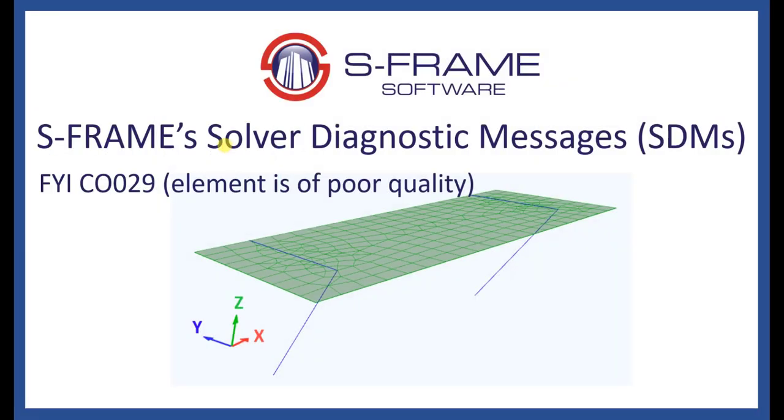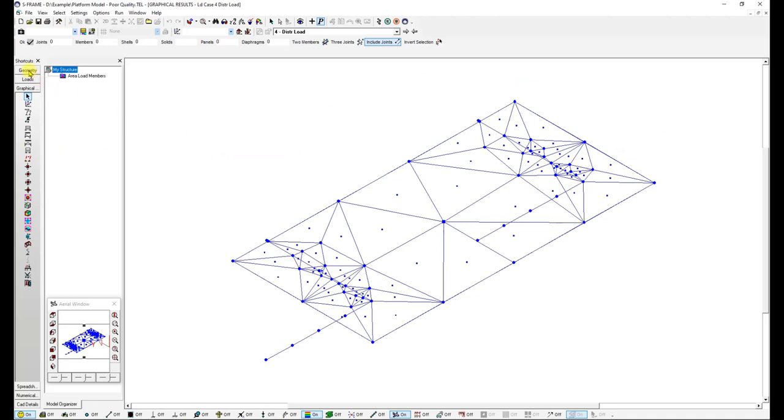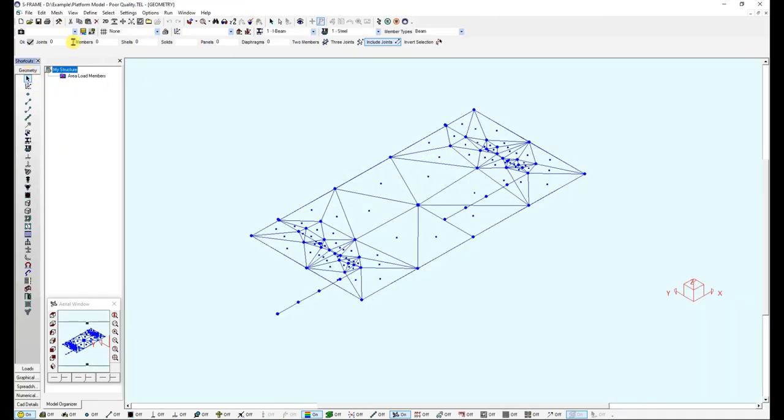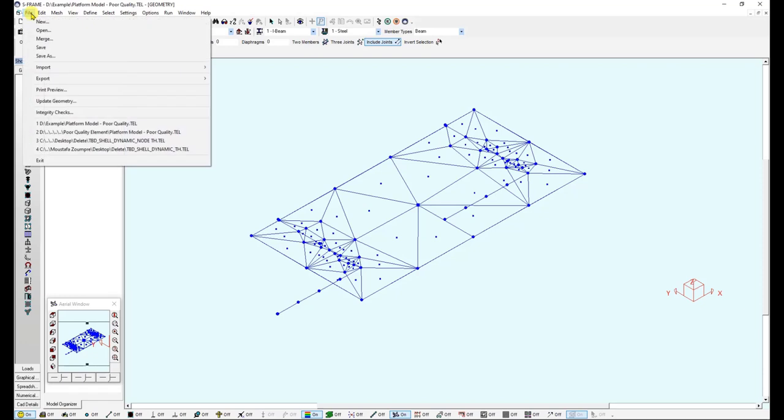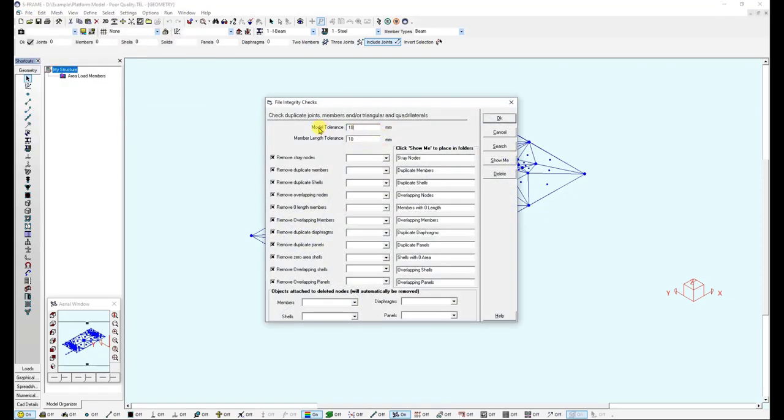So if I go back to my model, then to the geometry, I can start by checking the model tolerance I am using. I go to File, Integrity Checks, I am using a model tolerance of 10, which is OK.